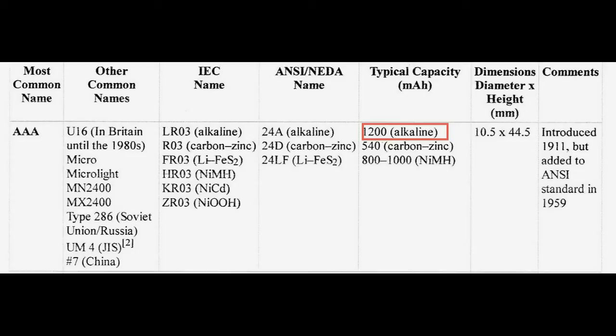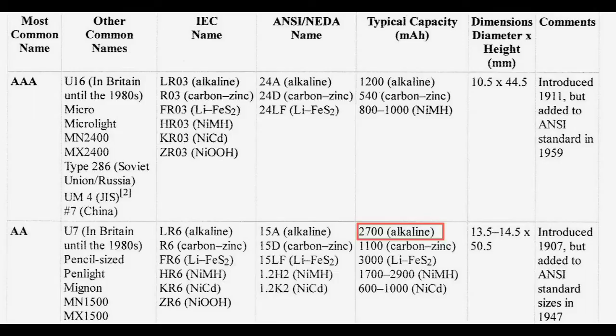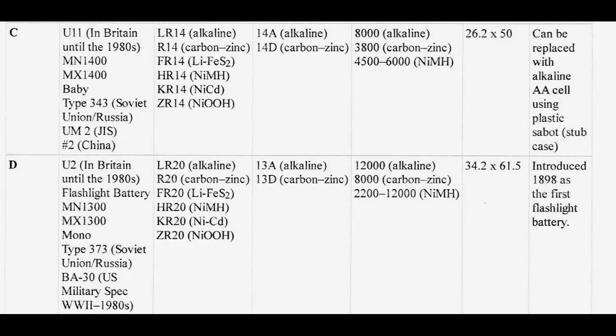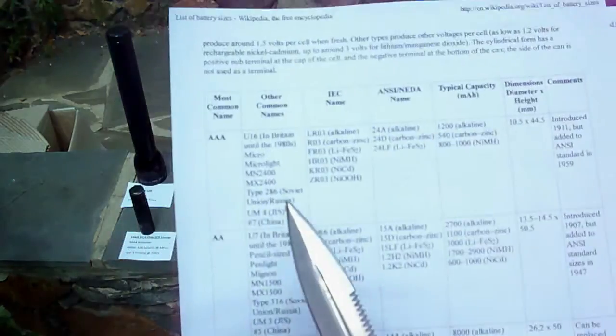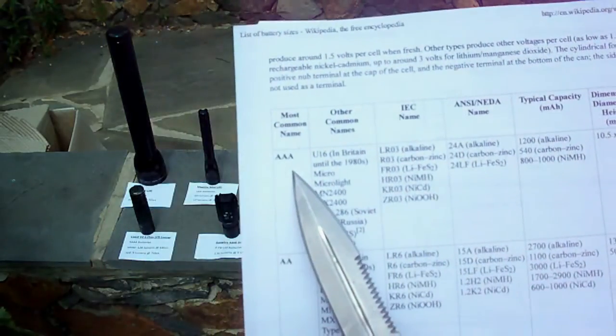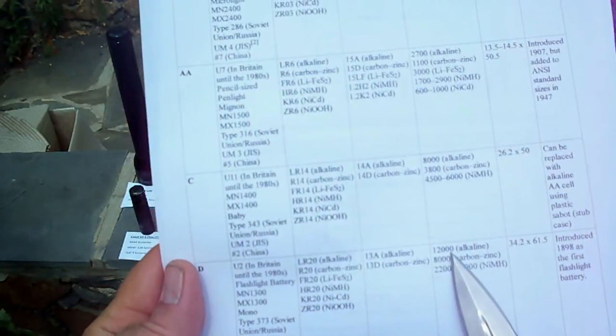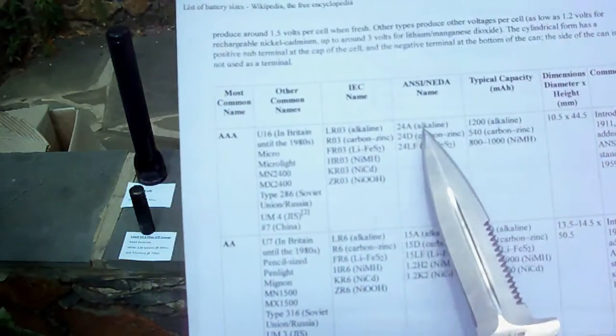A double A, which is not that much bigger, provides more than double the milliamps - twenty seven hundred milliamp hours compared to the twelve hundred of a triple A. And it goes on up. A C battery provides eight thousand milliamp hours and a D battery provides twelve thousand milliamp hours. As you can see, a D battery has ten times the capacity of a triple A battery - twelve thousand milliamp hours for a D, twelve hundred for a triple A battery.